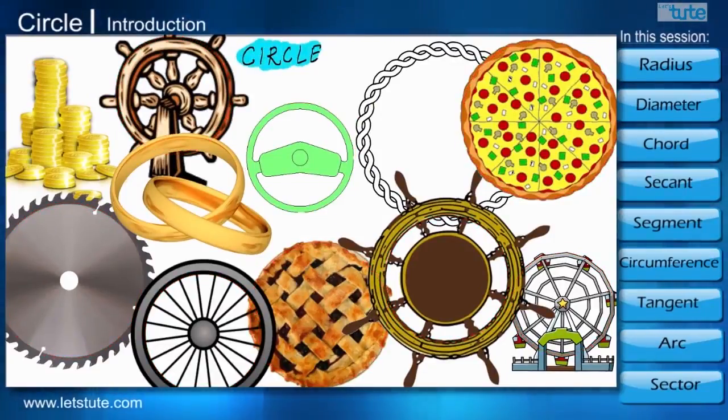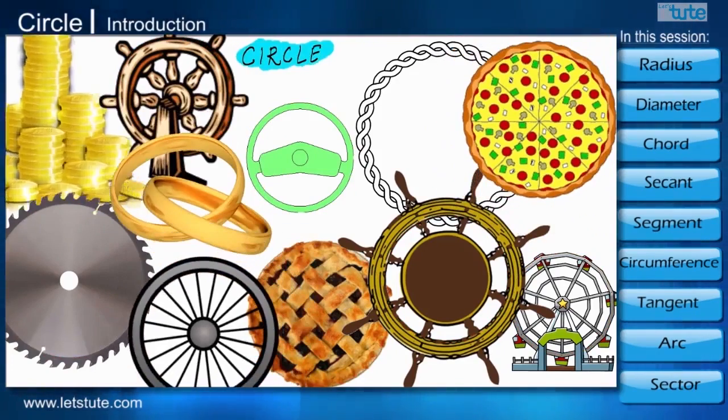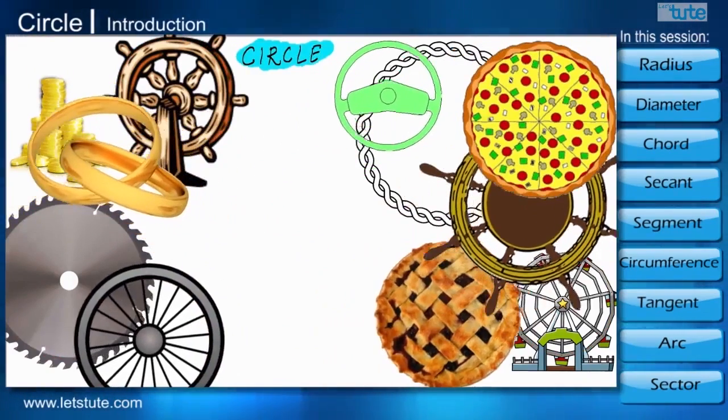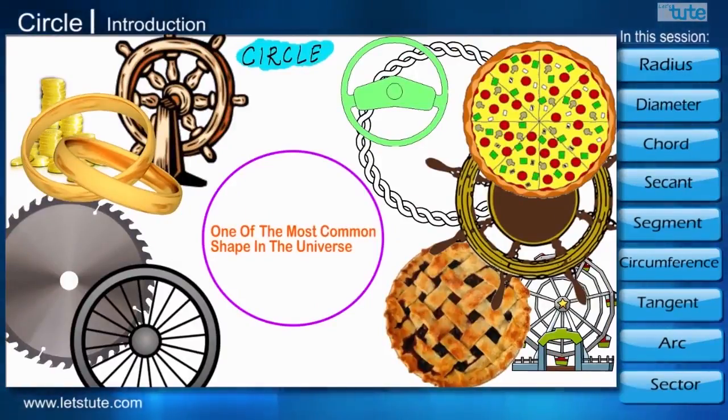For example, the shape of a bangle, shape of a pizza, bicycle wheel, coins, etc. Circle is one of the most common shapes in this universe.